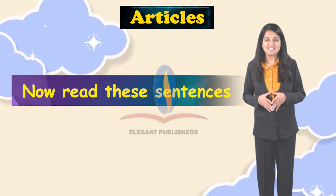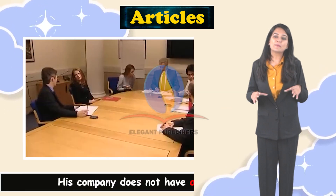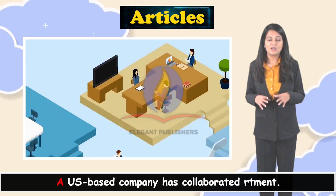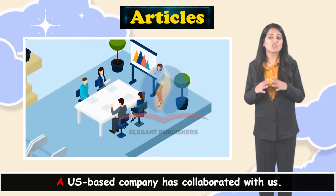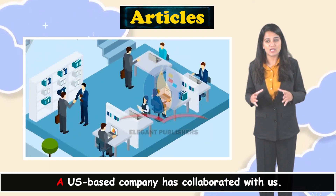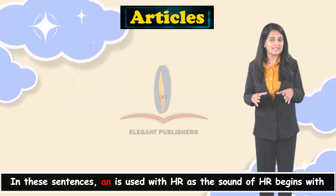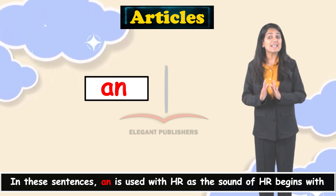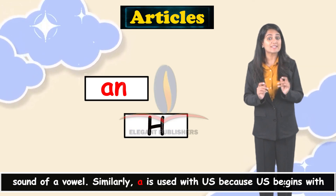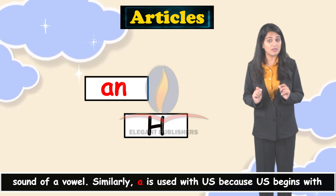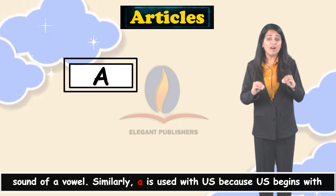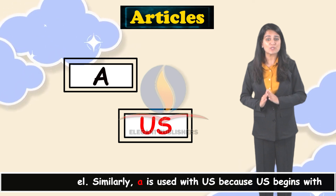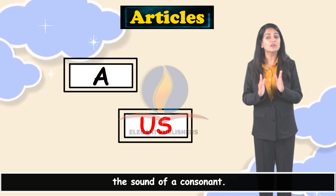Now read these sentences: 'His company does not have an HR department.' 'A US based company has collaborated with us.' In these sentences, 'an' is used with HR because the sound of H begins with the sound of a vowel. Similarly, 'a' is used with US because US begins with the sound of a consonant.